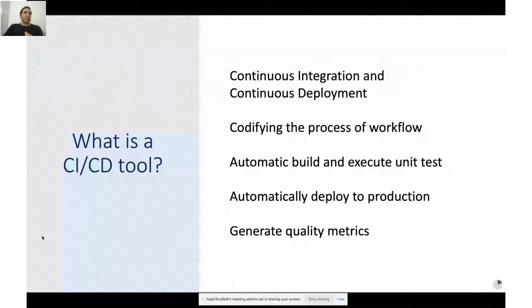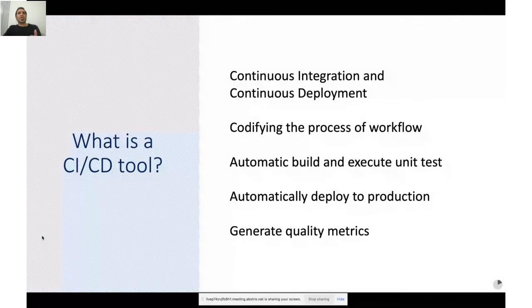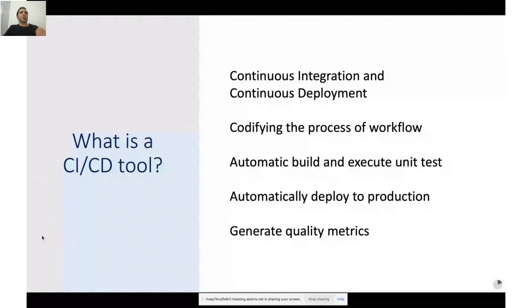What is CI/CD? CI/CD is a combination of two different but related concepts: first, continuous integration, and second, continuous deployment. For many developers, it's the process of codifying the workflow of development. They use it to automatically build, execute, and test every time team members contribute to the code base. They also use it to automatically deploy to production and to generate code quality metrics like code coverage and test coverage.